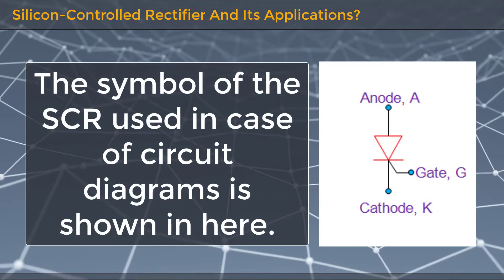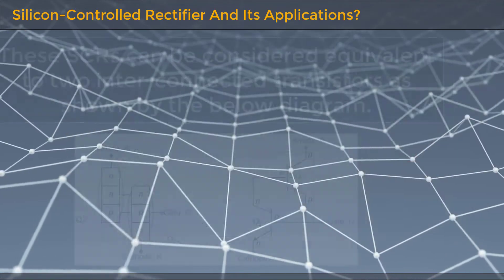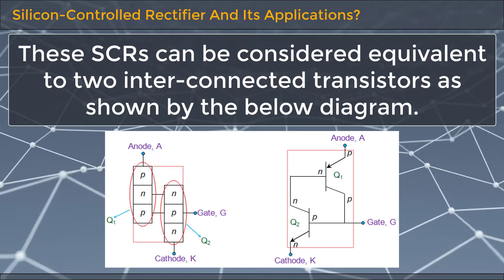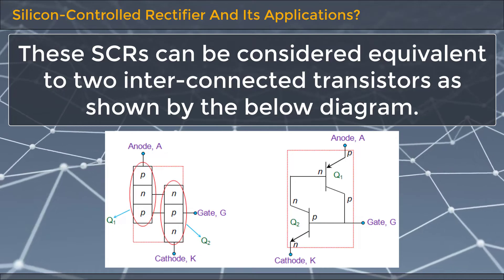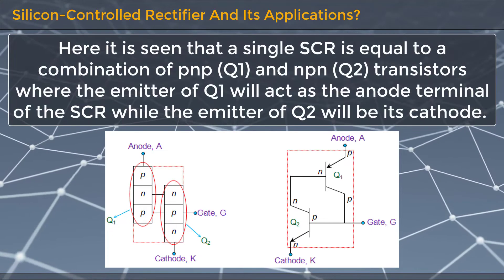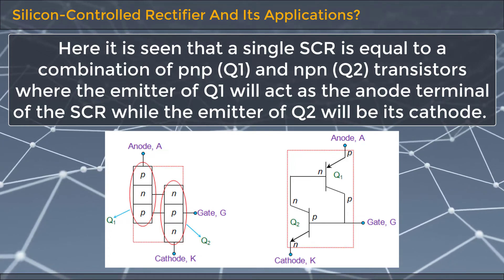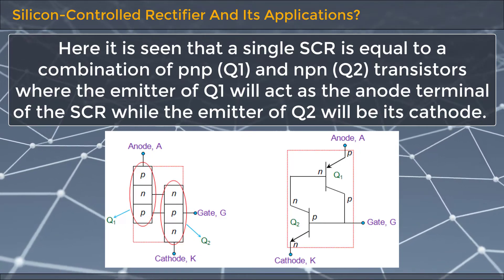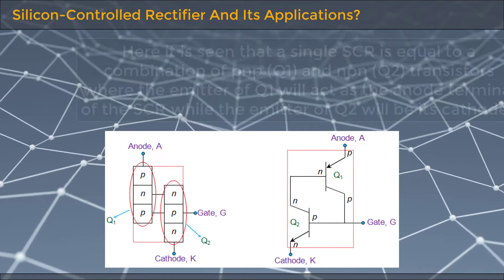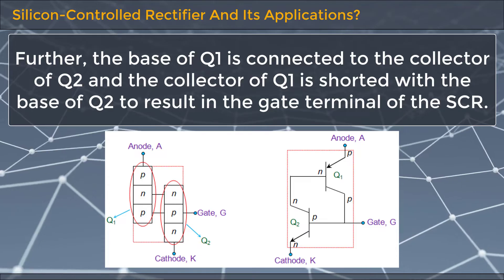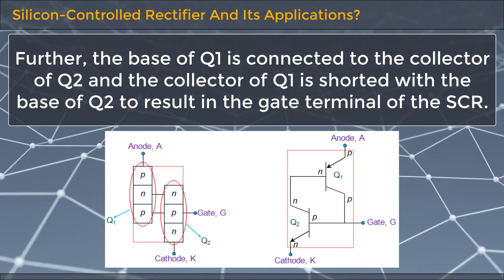The symbol of the SCR used in circuit diagrams is shown here. The SCR can be considered equivalent to two interconnected transistors. A single SCR is equal to a combination of PNP transistor Q1 and NPN transistor Q2, where the emitter of Q1 acts as the anode terminal of the SCR, while the emitter of Q2 is its cathode. The base of Q1 is connected to the collector of Q2, and the collector of Q1 is shorted with the base of Q2 to result in the gate terminal of the SCR.